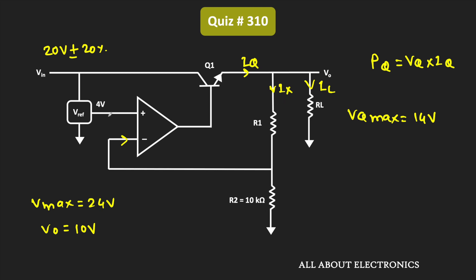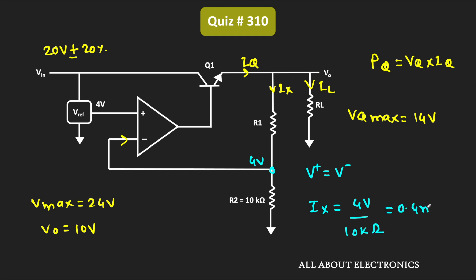As per the concept of virtual ground, the voltage V+ will be equal to V−, meaning the same 4V will also appear at the negative terminal, and hence the same voltage will also appear at this node. That means the voltage at this node is equal to 4V. Since the same current Ix is also flowing through this 10kΩ resistor, we can say that Ix is equal to 4V divided by 10kΩ, which is equal to 0.4mA.